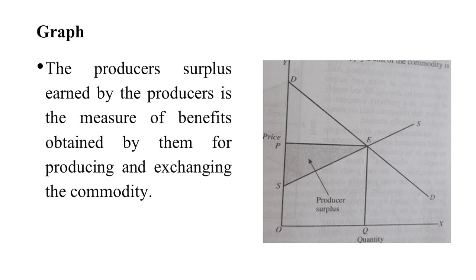You can see on the screen that this shaded area shows the producer surplus — what he expects from the market and what he actually receives. This difference is known as the producer surplus.